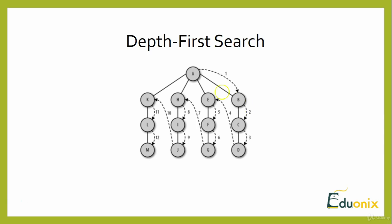Let's look at depth first search. Depth first search involves following a path from the beginning vertex until it reaches the last vertex — following a path till you reach the last point. We determine the source and the destination, following from the beginning vertex till the last vertex with backtracking and following the next path until we reach the last vertex. We are not searching for a particular item in this algorithm.